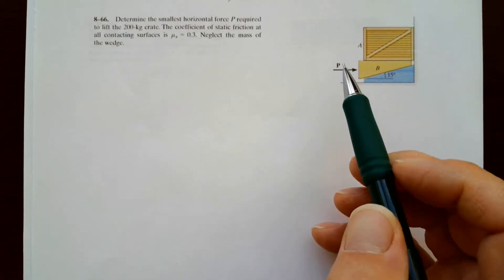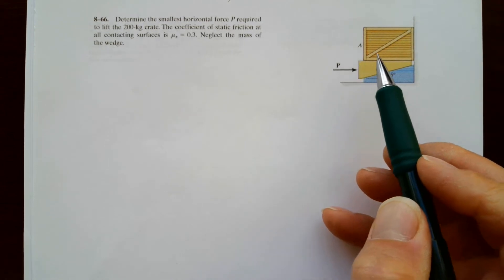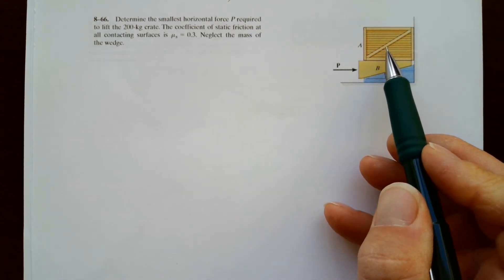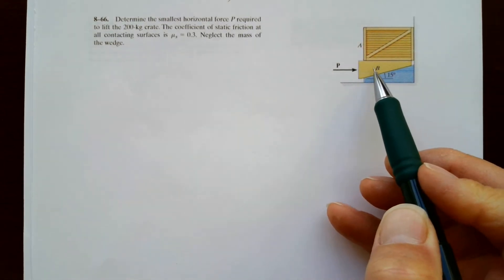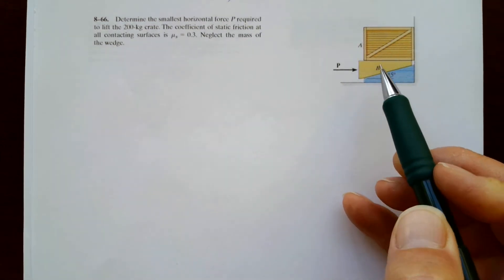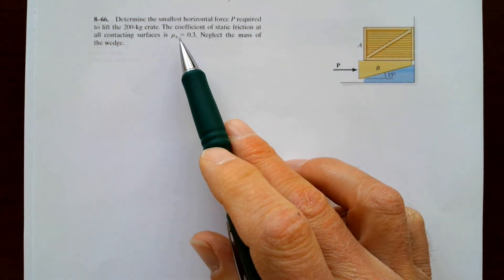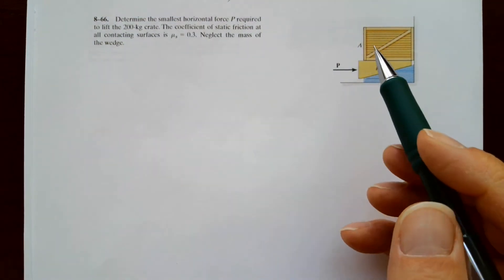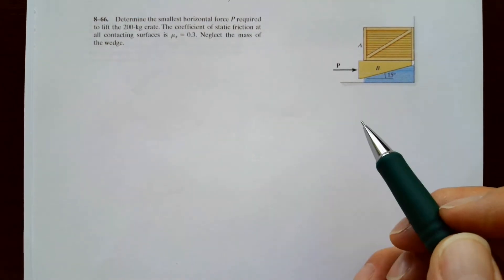Problem 866. Determine the force required to lift a 200 pound crate. So we're pushing this in and this goes up this incline and it pushes up the crate. The static friction in all contact surfaces is 0.3. Neglect the mass of the wedge.